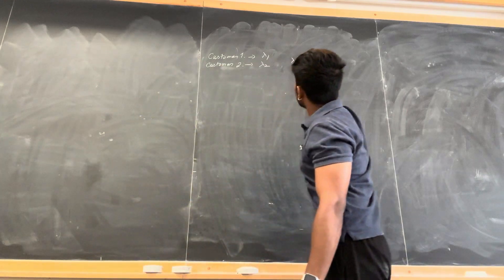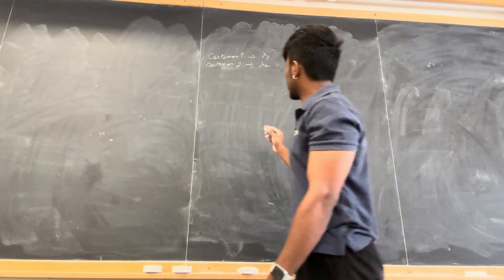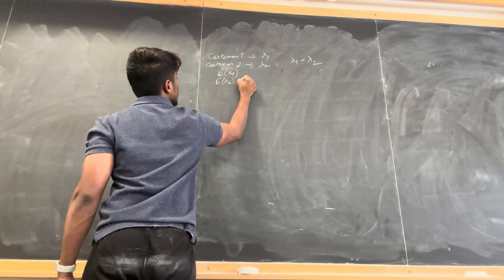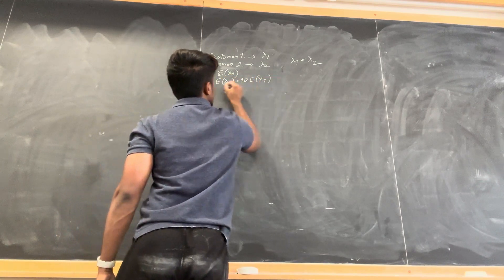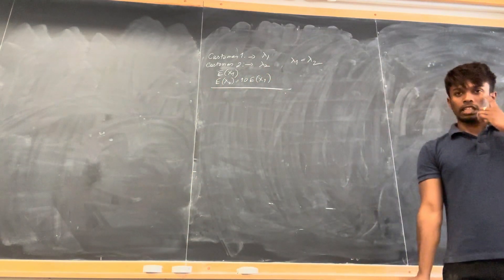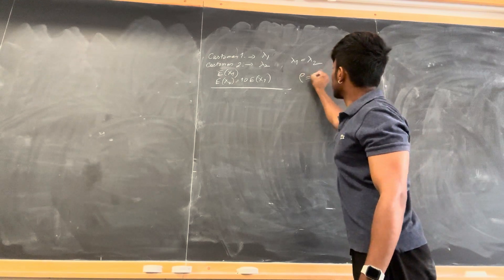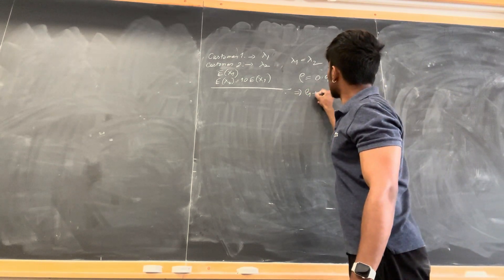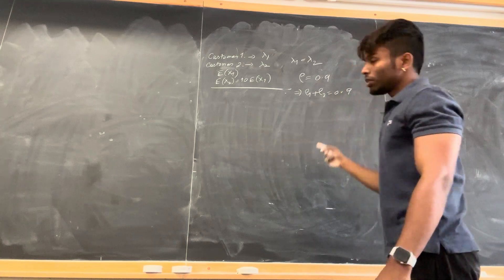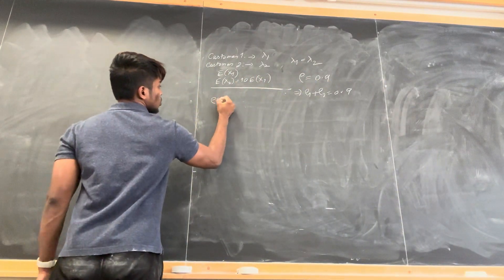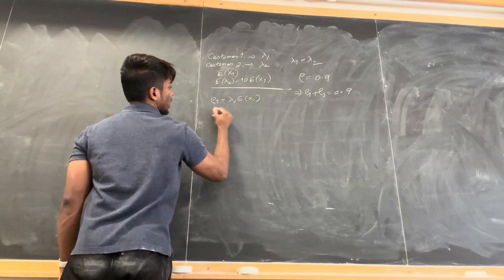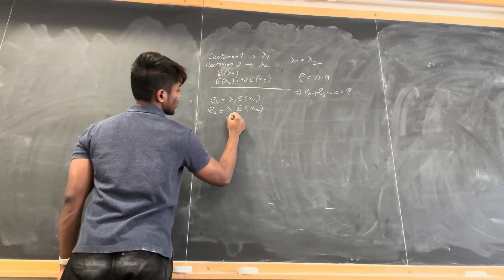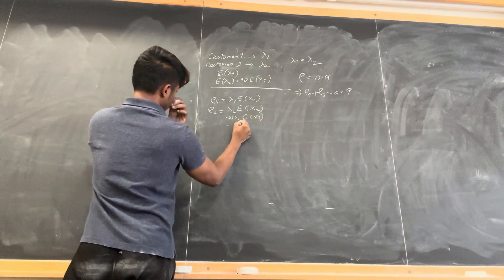λ_1 is equal to λ_2. The expected service time for customer 1 is E[x_1], and for customer 2, E[x_2] is 10 times the expected service time of customer 1, so E[x_2] = 10·E[x_1]. The system load coefficient ρ is equal to 0.9, so ρ_1 + ρ_2 = 0.9. Since ρ = λ·E[x], we have ρ_1 = λ_1·E[x_1] and ρ_2 = λ_2·E[x_2] = λ_1·10·E[x_1] = 10·ρ_1.